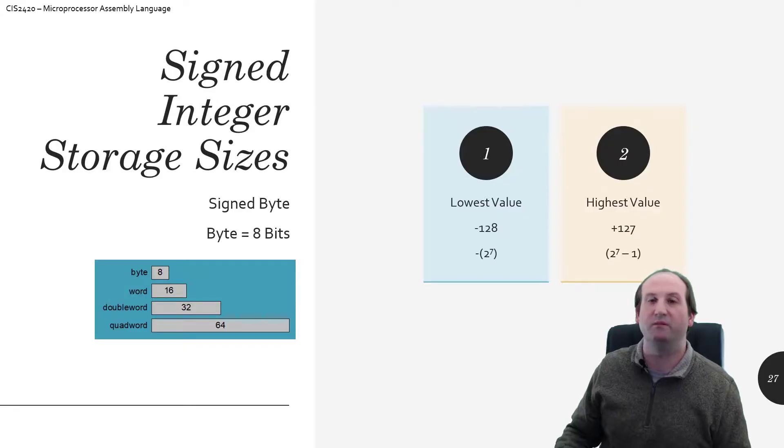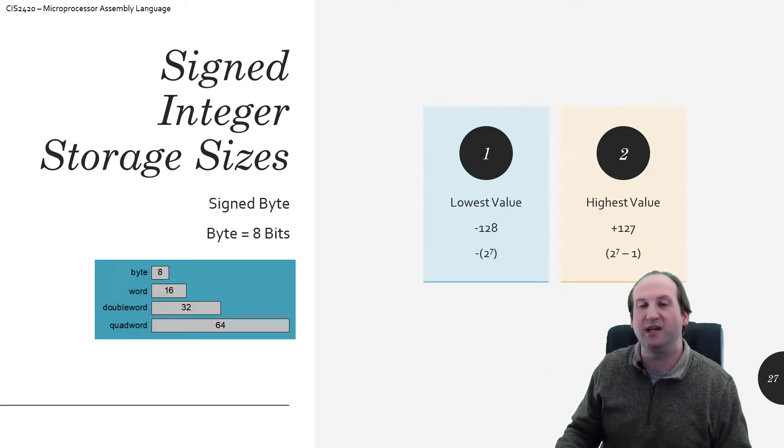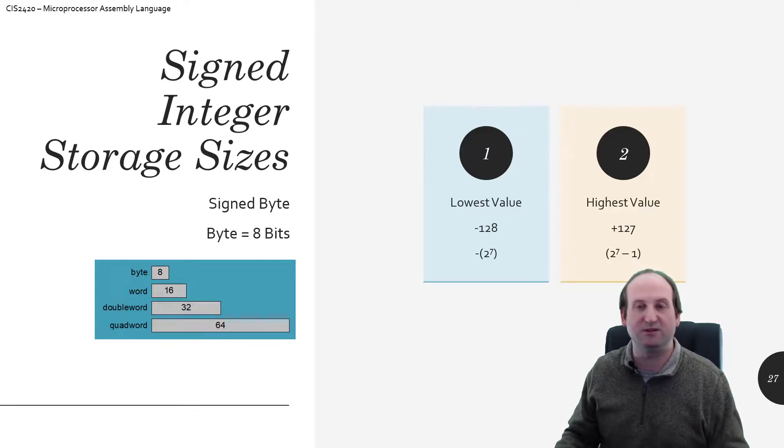There's one big thing to remember here, and it doesn't matter how many bits of storage we're using, the number of possible combinations of those number of bits, number of switches, will never change. So in this case, going back to the unsigned integer storage sizes video as well, like for eight bits of storage, there's 256 different combinations of ways those switches can be on and off.